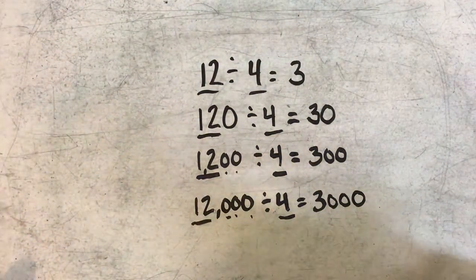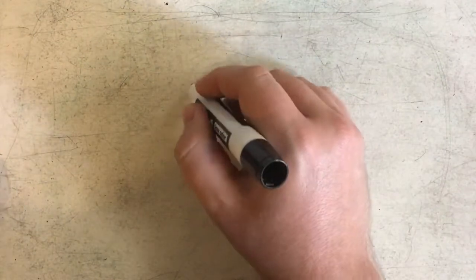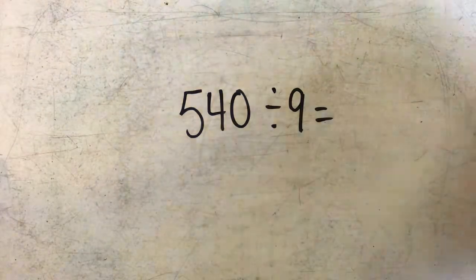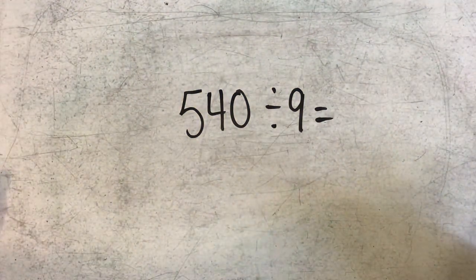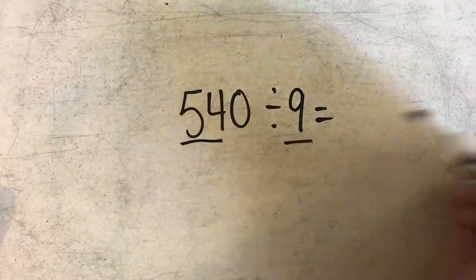Here I have a pattern of 12, 4, and 3, but this method still works even if I don't have a pattern listed. For instance, if I had 540 divided by 9, all I'm going to do is pick out the basic fact, which in this case would be 54 divided by 9.